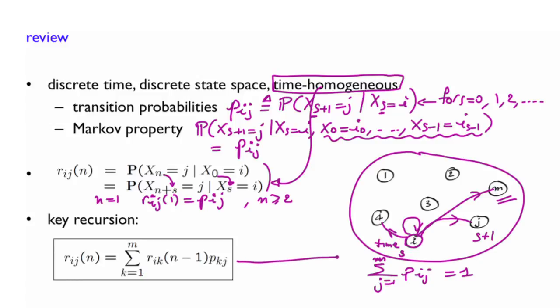Essentially, you have the time step here. This is the current time s. You are interested in what's going to happen at n plus s, that means n steps later. Here you are in state i. You are interested in knowing what is the probability of being in state j at that time. And what you simply do is you look at the step n plus s minus 1, just before the last one. And then you say, well, let me do a divide and conquer. This is k here.